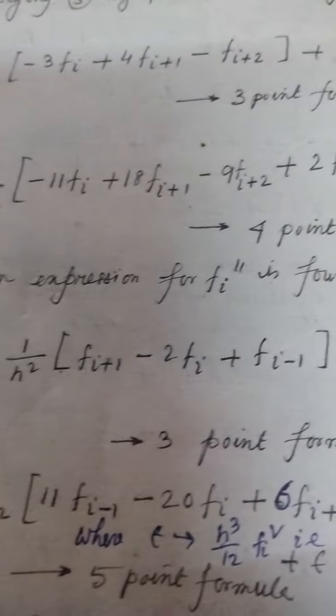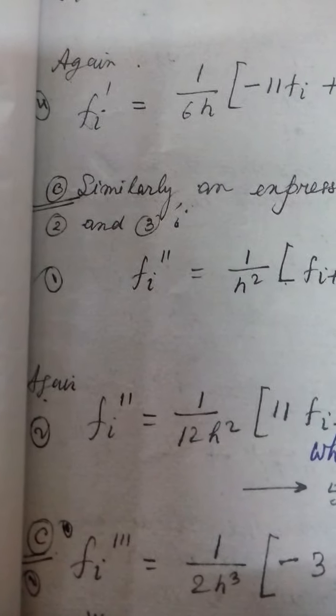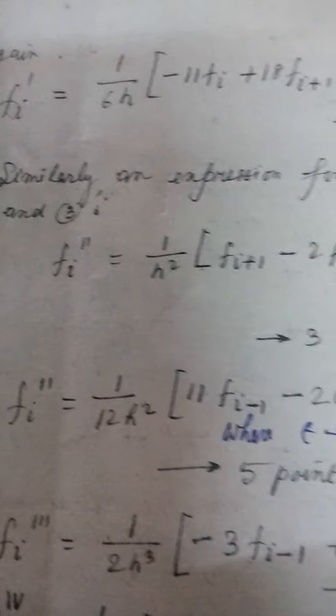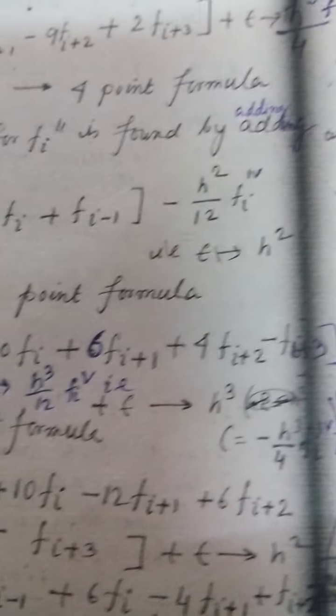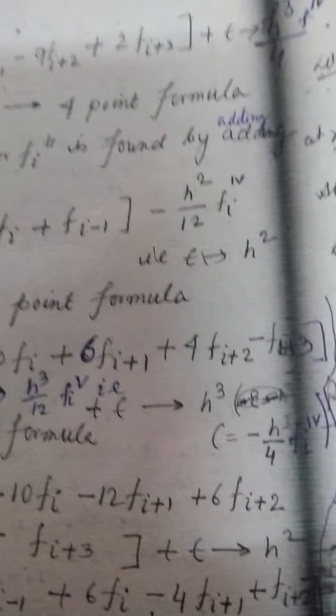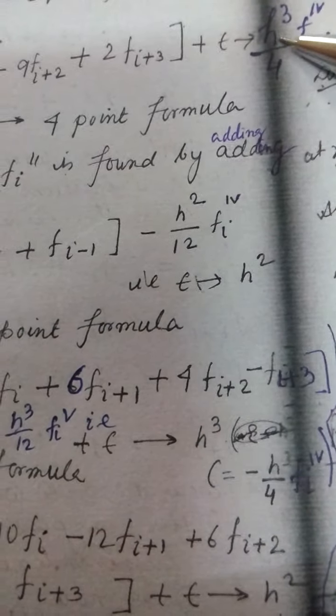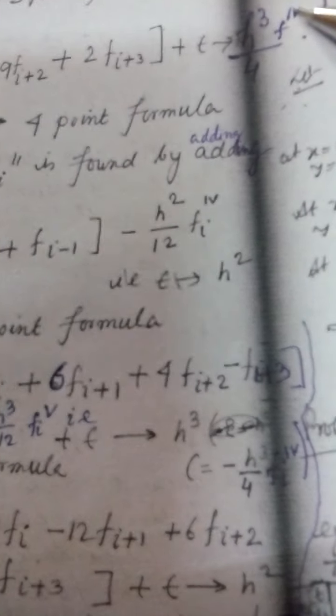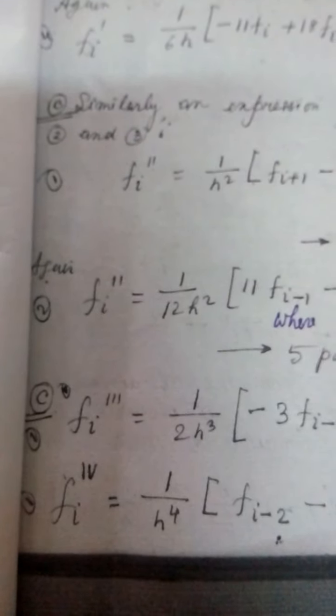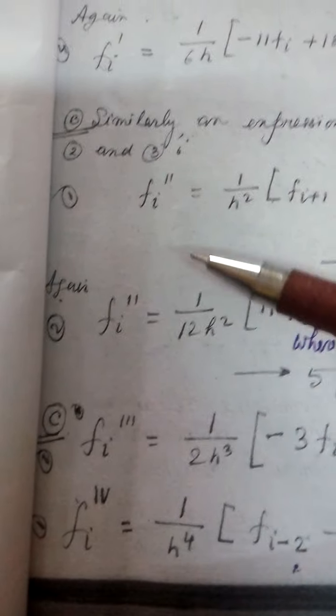This is called the three point formula. And again, this one, the error is h to the power cube by 4 into f4, actually 5 4. So in the second one, similarly.